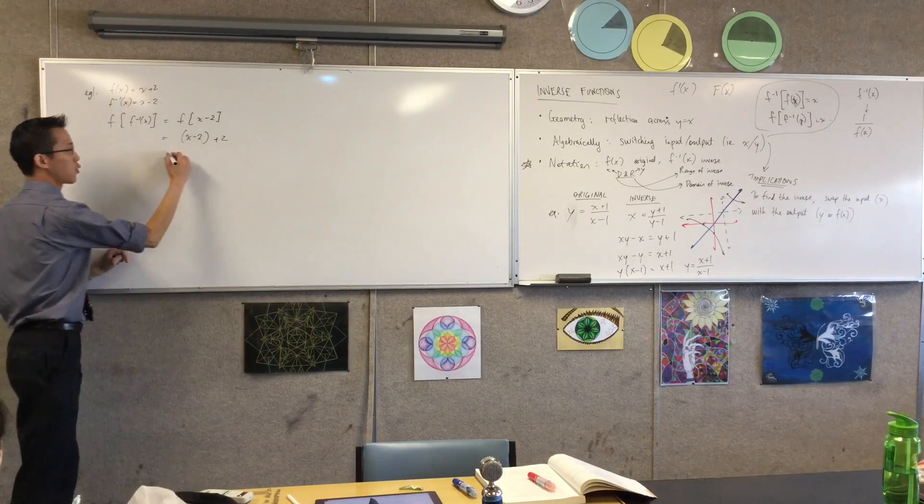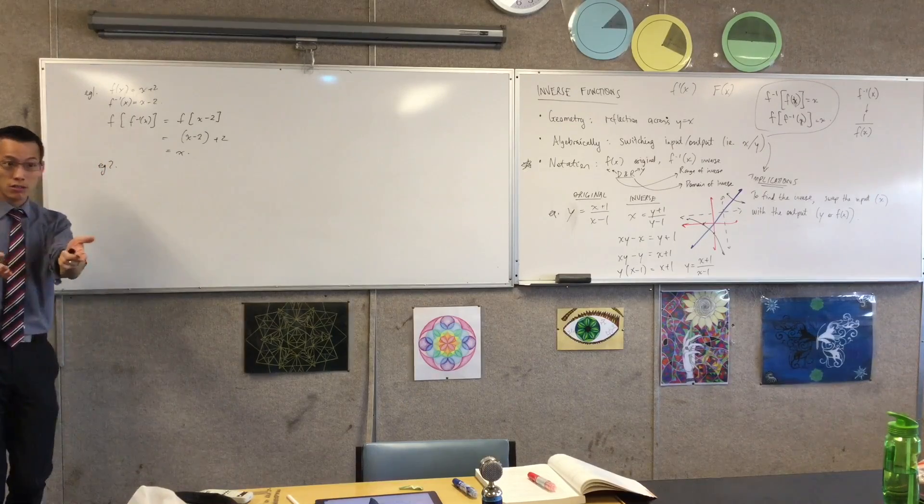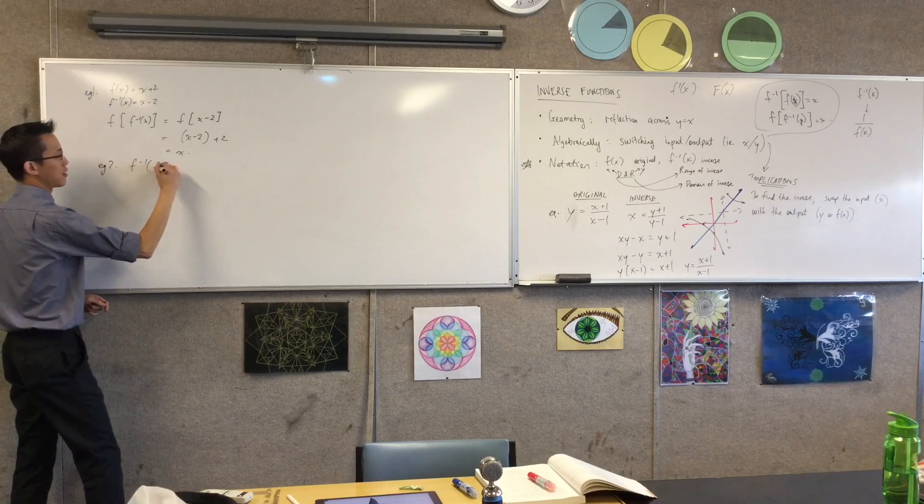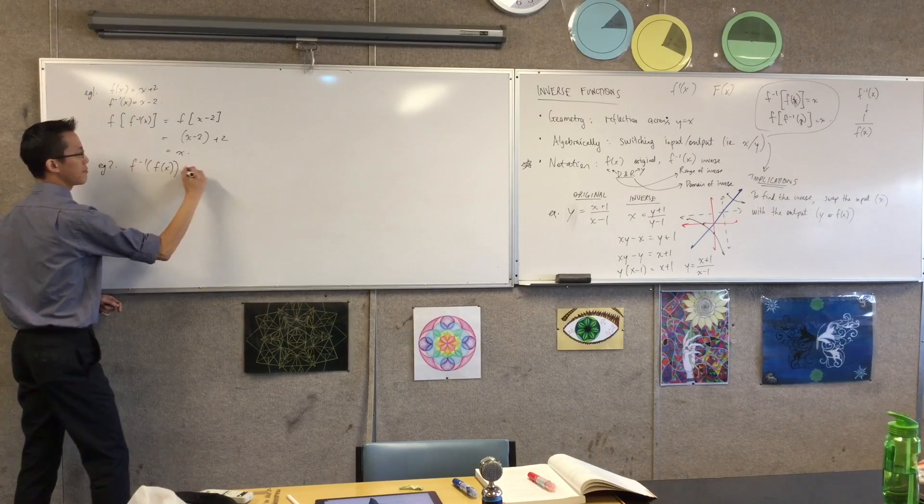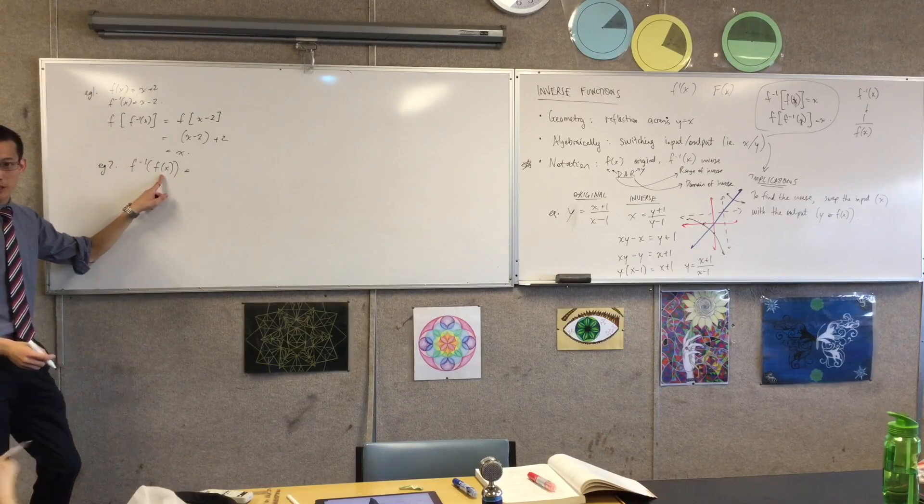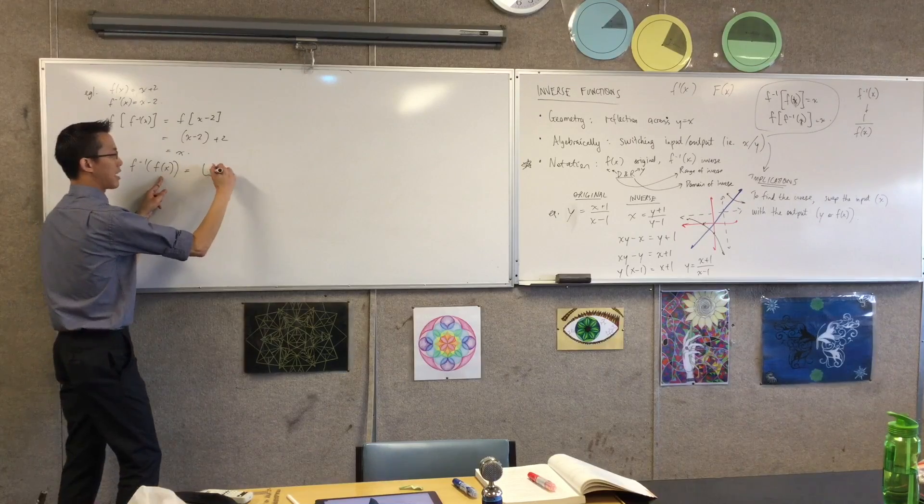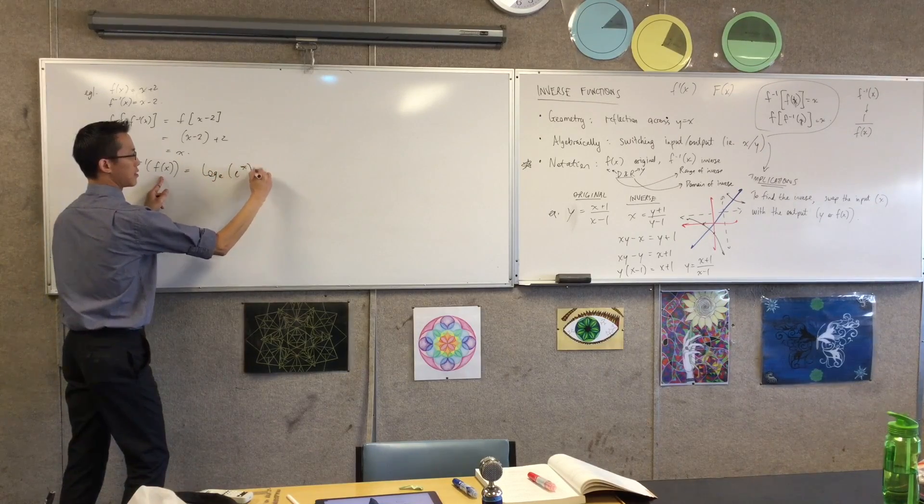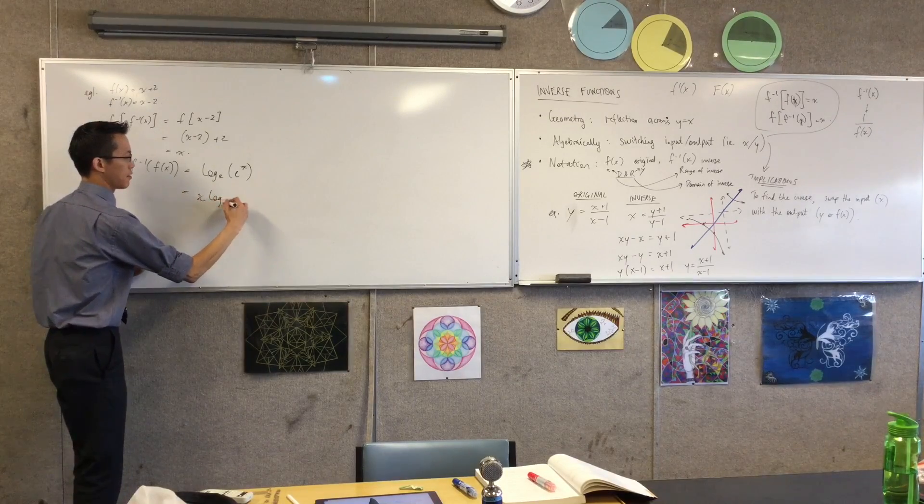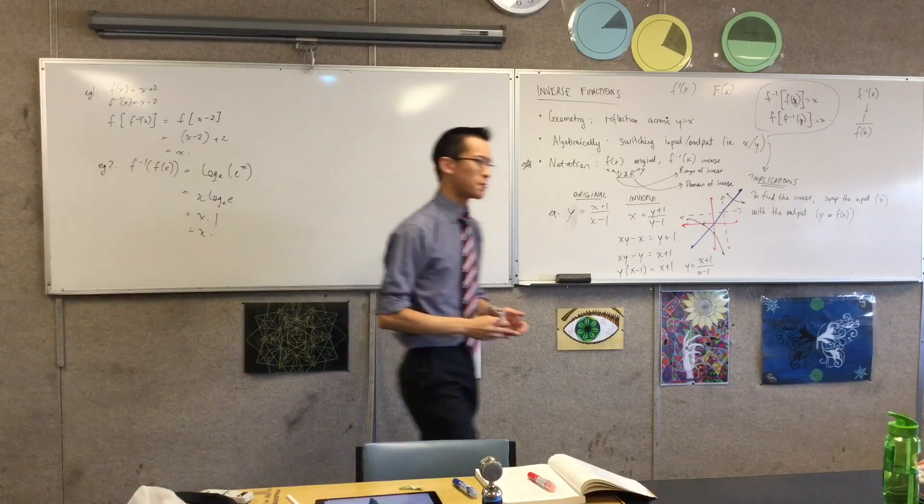There's the first function, which, of course, is just x. Simple. Another example. Let's do the logs, the exponentials. If I say, what's the other direction this time? If we go with the logs and exponentials now, if our exponential function was the exponential, sorry, was the original function. So I'm going to say log base e of e to the x. Yeah, this is, well, if I take that out, that's just x times one. It works.